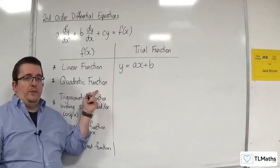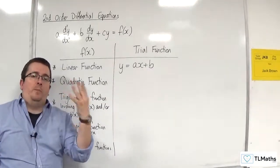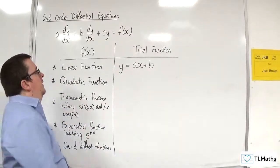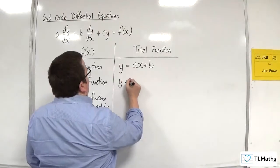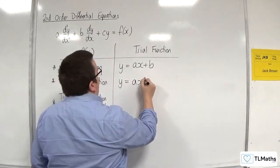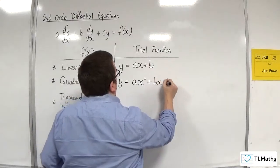If it's a quadratic as your f of x, then again, we need to choose a polynomial of the same order. So we would have a quadratic as our trial function: ax squared plus bx plus c.